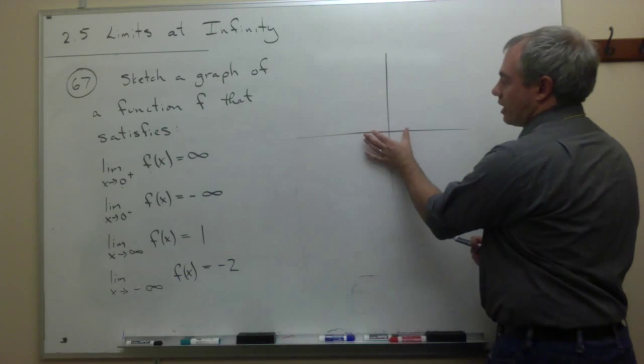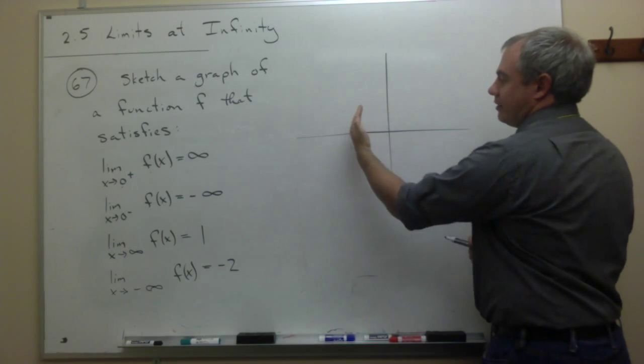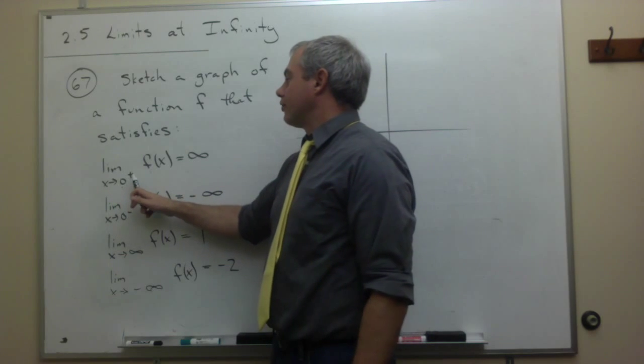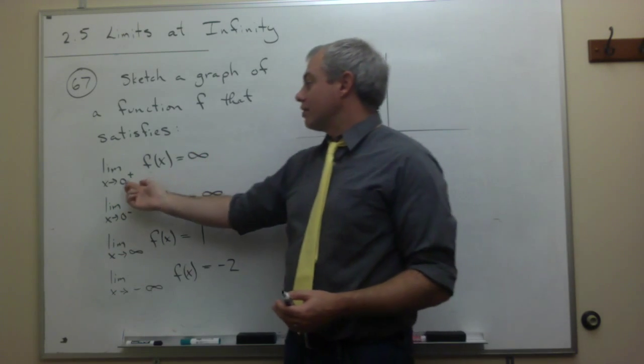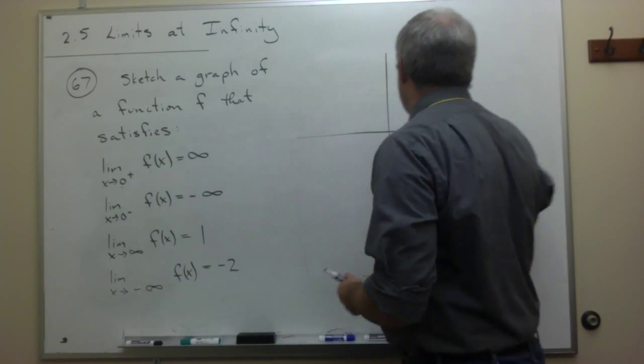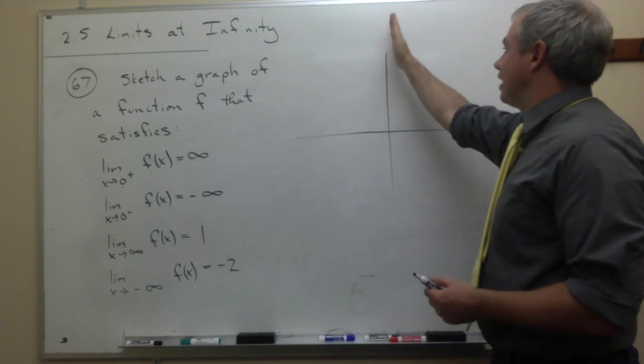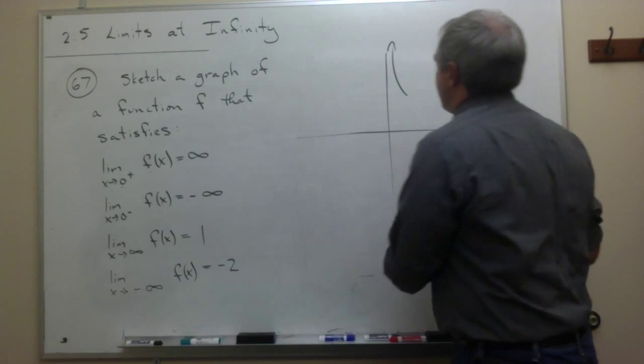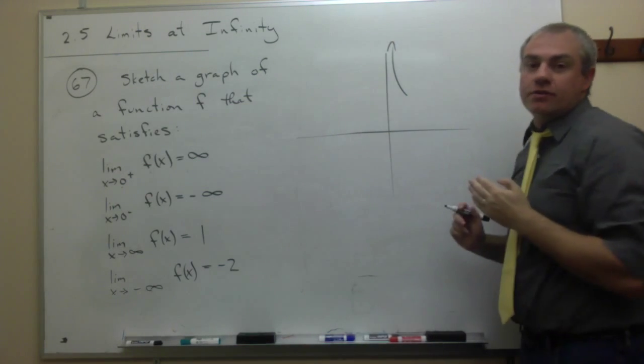Well, as x goes to 0, we're getting close to x equals 0 from the right, from the left. What's happening? As x goes to 0 from the right, the y value is getting close to infinity. So as we come in from the right side, the y values go to infinity. So I'm just going to draw an arrow up here saying as I come in from the right side, we're getting close to infinity.